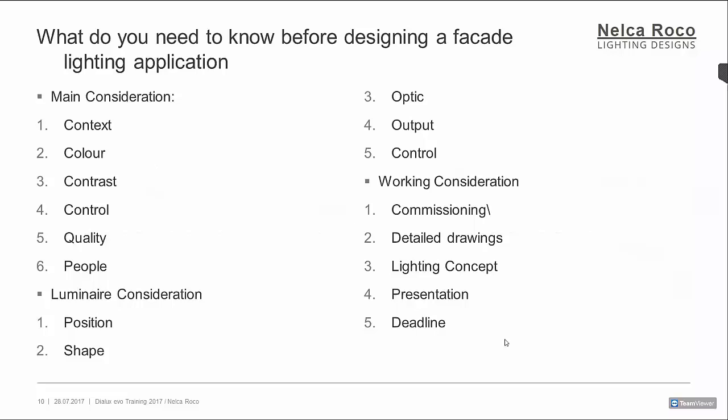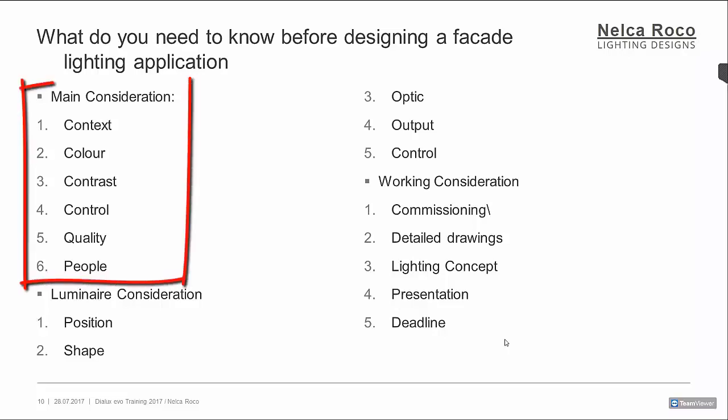What do you need to know before designing a facade lighting application? There are six main considerations: the context, the color, the contrast, the control, the quality, and the people.